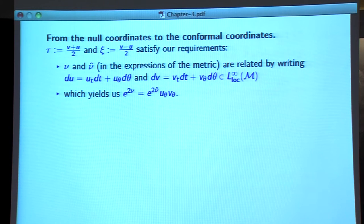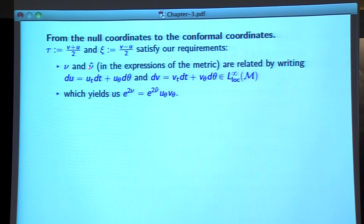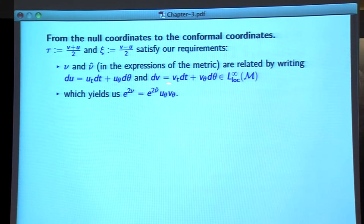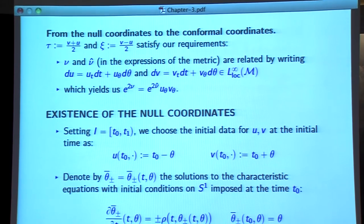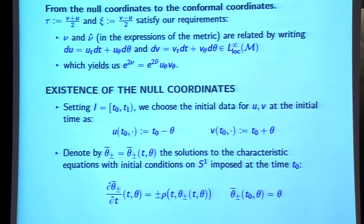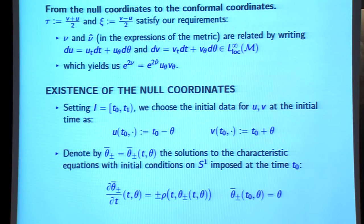The quantities u_θ and v_θ have limited regularity, so you have to carefully track this regularity: if you have regularity for ν, make sure you keep the same regularity for ν̂. The existence of these null coordinates is done by imposing initial values on the slice t₀ — choosing u = t₀ − θ and v = t₀ + θ — so that if you compute τ, you recover the initial slice as t₀ in the new coordinates.